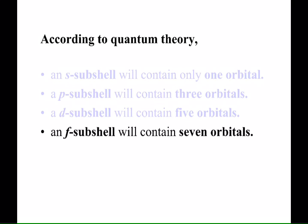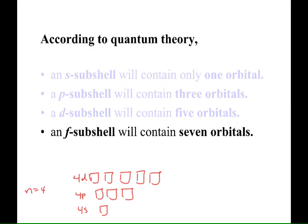If you're a visual person, this is how I think of it. When we got up to N equals 4, we had these four types of subshells. We had a 4S with one box, a 4P with three boxes—each box is an orbital—a 4D with five boxes, and a 4F that gives us seven boxes.